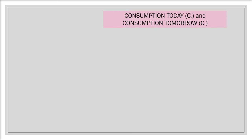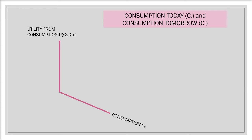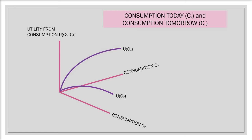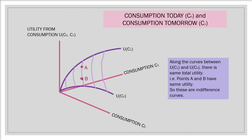Now let's look at the utility derived from both consumption today, C0, and consumption tomorrow, C1. On the y-axis we have utility U(C0, C1), and on the x-axis we have consumption in the current period, C0. We include another axis to represent consumption tomorrow, C1, and plot the U(C1) curve. The indifference curves are derived from points where total utility between U(C1) and U(C0) is the same. Any point on one indifference curve has the same utility — for example, points A and B both have similar utility. As we move to the right along the utility curves, we move to higher indifference curves giving a higher level of satisfaction.